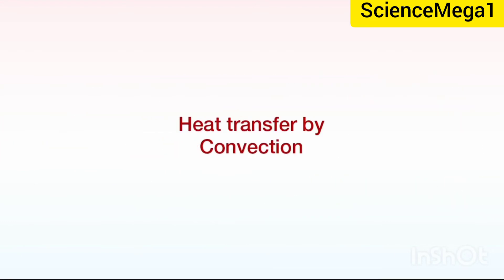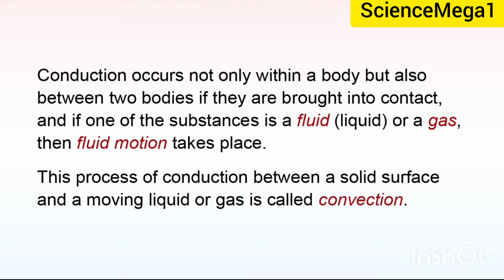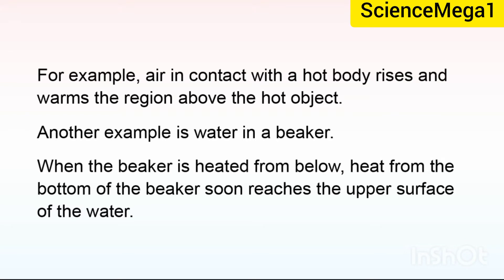We now turn our attention to heat transfer by convection. In the first method of heat conduction, we have learned that heat can be transferred within bodies and between different bodies that are in direct contact. Conduction occurs not only within a body but also between two bodies if they are brought into contact. And if one of the substances is a fluid, that is liquid or gas, then fluid motion takes place. This process of conduction between solid surface and a moving liquid or gas is called convection. For example, air in contact with a hot body rises and warms the region above the hot object. Another example is water in a beaker. When the beaker is heated from below, heat from the bottom of the beaker soon reaches the upper surface of the water.